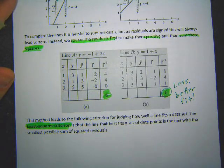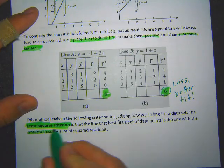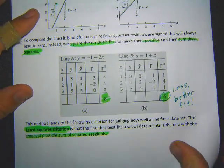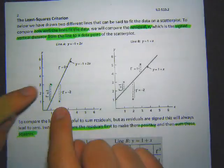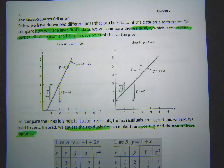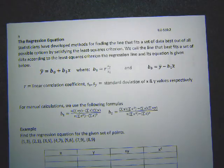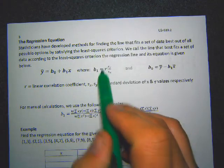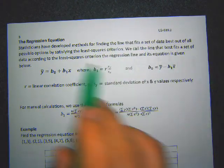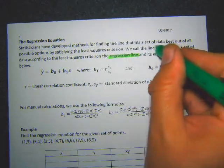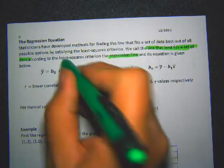We call this the least squares criterion. The line that best fits the data is the one with the smallest possible sum of squared residuals — that's what we're looking for. This line is called the regression line, and the regression equation is used to write it. It's the line that best fits the data according to the least squares criterion.